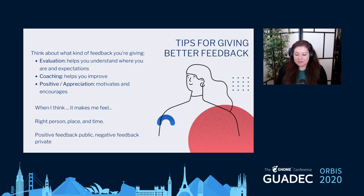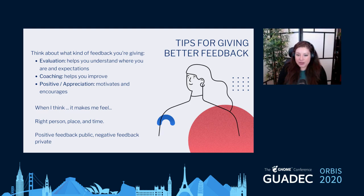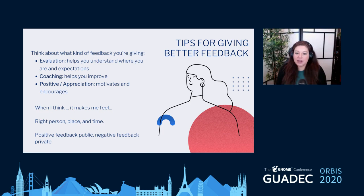Remember to talk to the right person at the right place at the right time. If you have a conflict with person A, don't talk to person B about it — the best way is to talk directly to person A. Ask for some time and make sure it's in a private place so you can really have a conversation. A quick tip: it's safe to give negative feedback in private and give positive feedback in public — that always makes people feel really great.